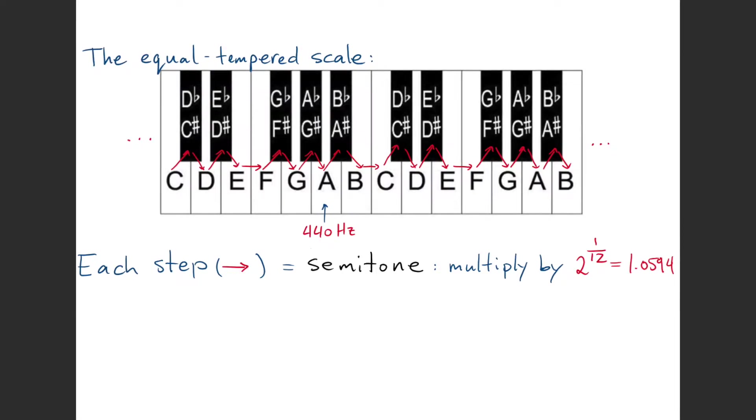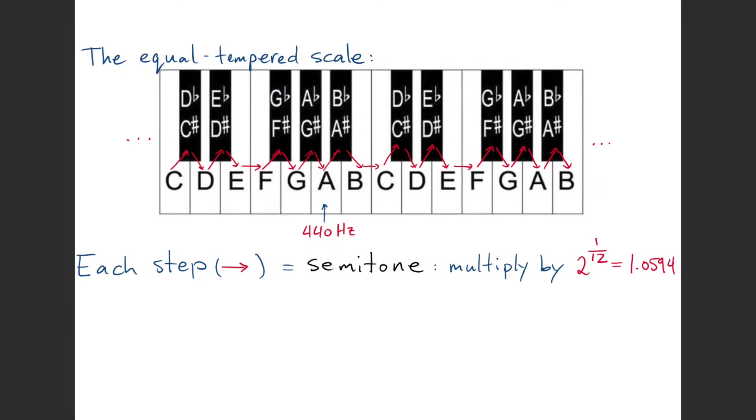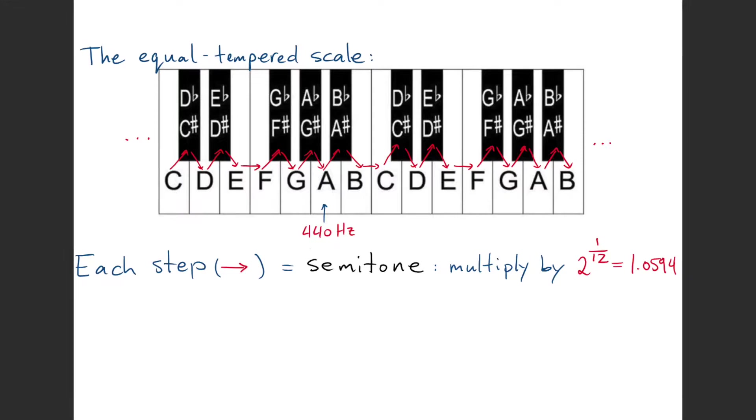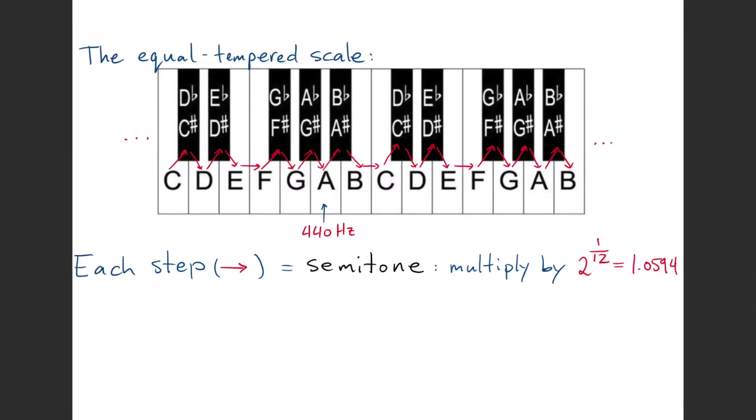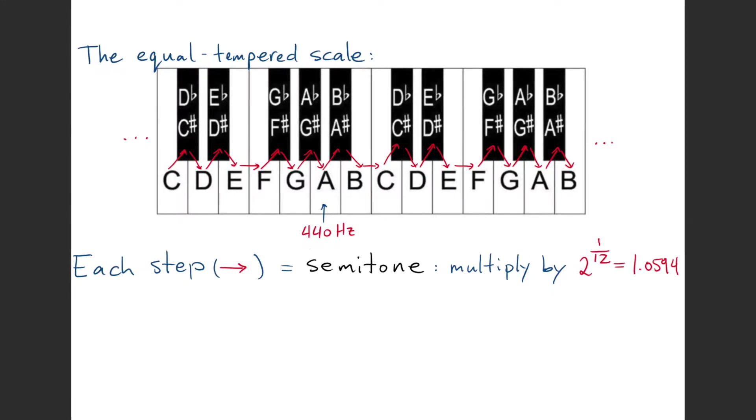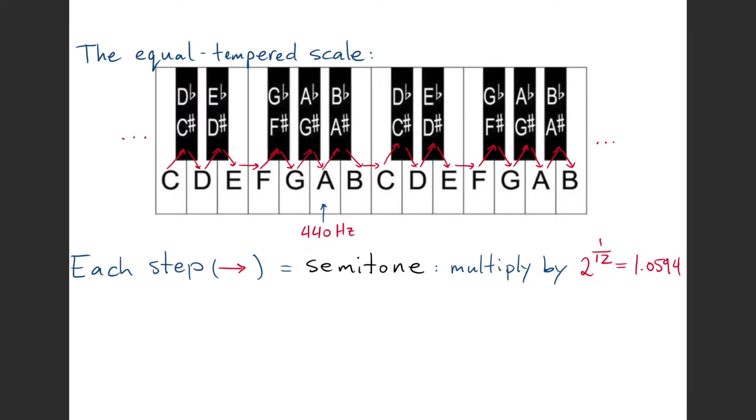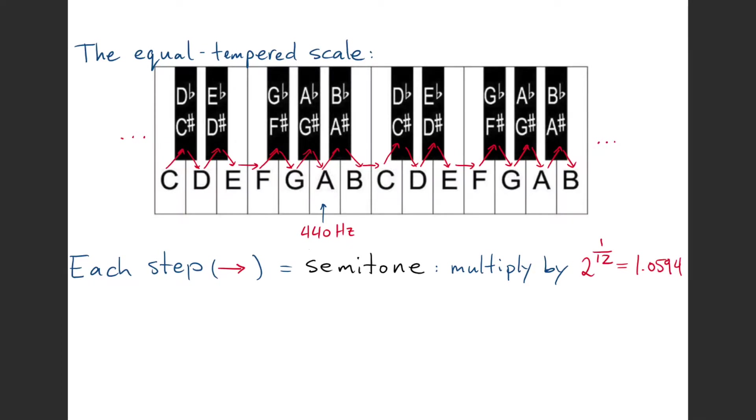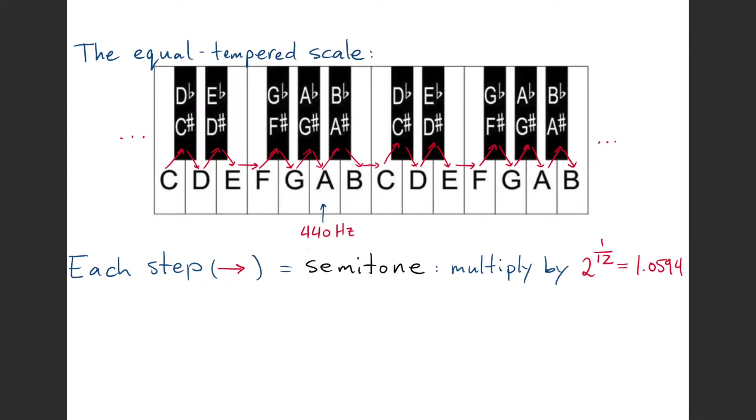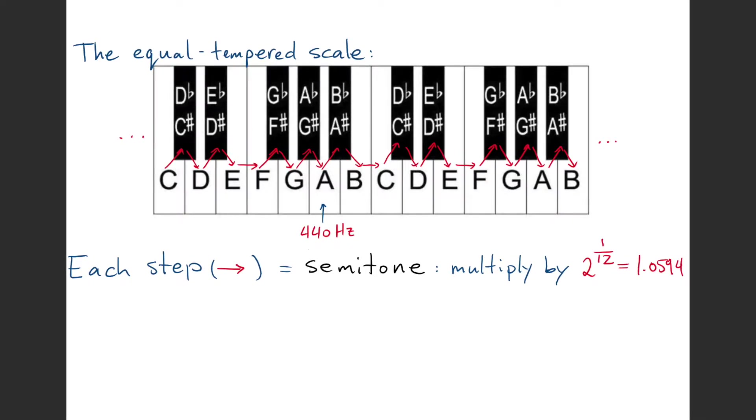Because the number is 2 to the power 1/12, multiplying 12 times gets you exactly the frequency which is twice as high as the one you started with. We remember that corresponds to a whole octave. You might ask, well why are we dividing that octave up into 12 parts, why not some other number of parts?